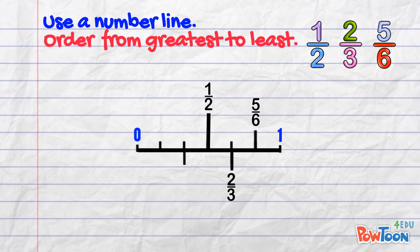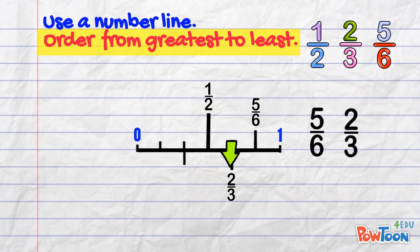OK, now we have to list the fractions in order from greatest to least. So start big and go small. Don't mess it up at this last step. First, we write the fractions. Look at the number line. The greatest fraction we marked is 5 sixths. Then it's 2 thirds.